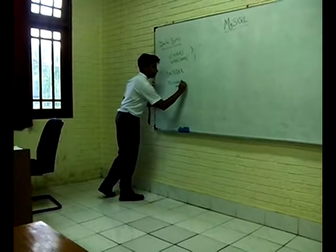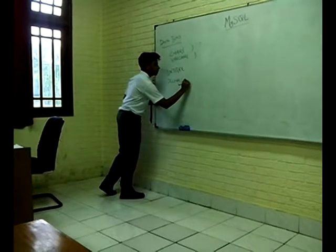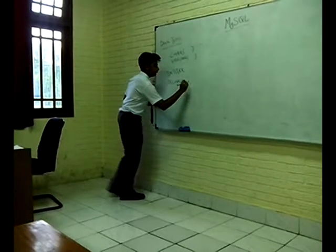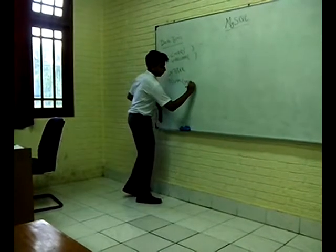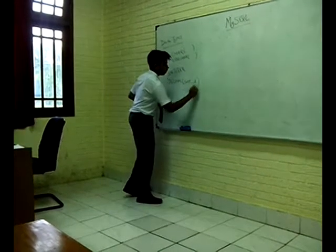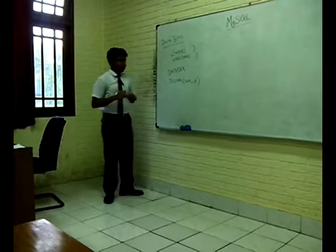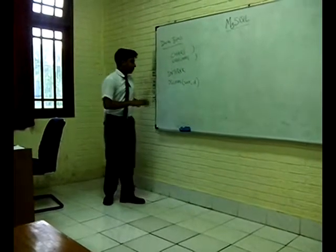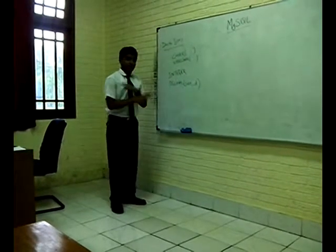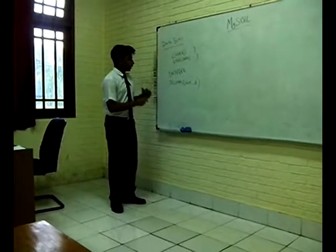Next we have the decimal data type. In this we get to specify the size and the number of digits we want after the decimal place. The size can be variable — it can be anything you want.